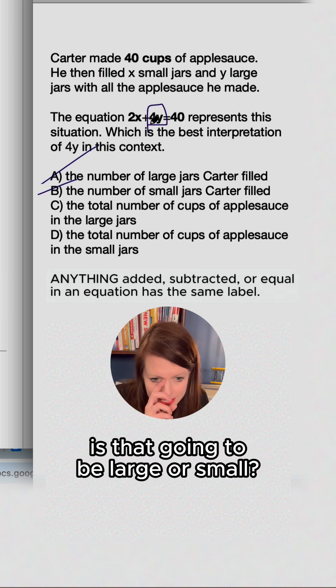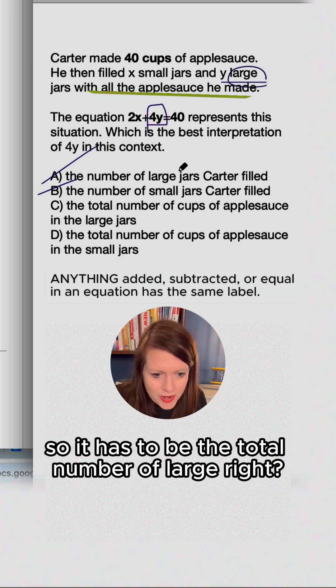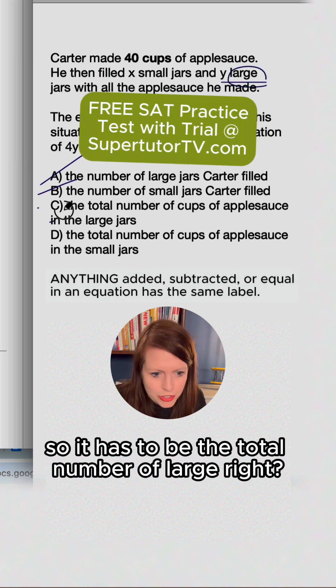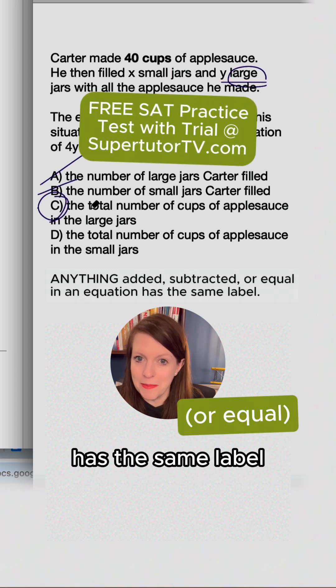And then the other thing is 4. Is that going to be large or small? Well, this pertains to large, so it has to be the total number of large, right? Not small. Label hacking: everything added or subtracted has the same label.